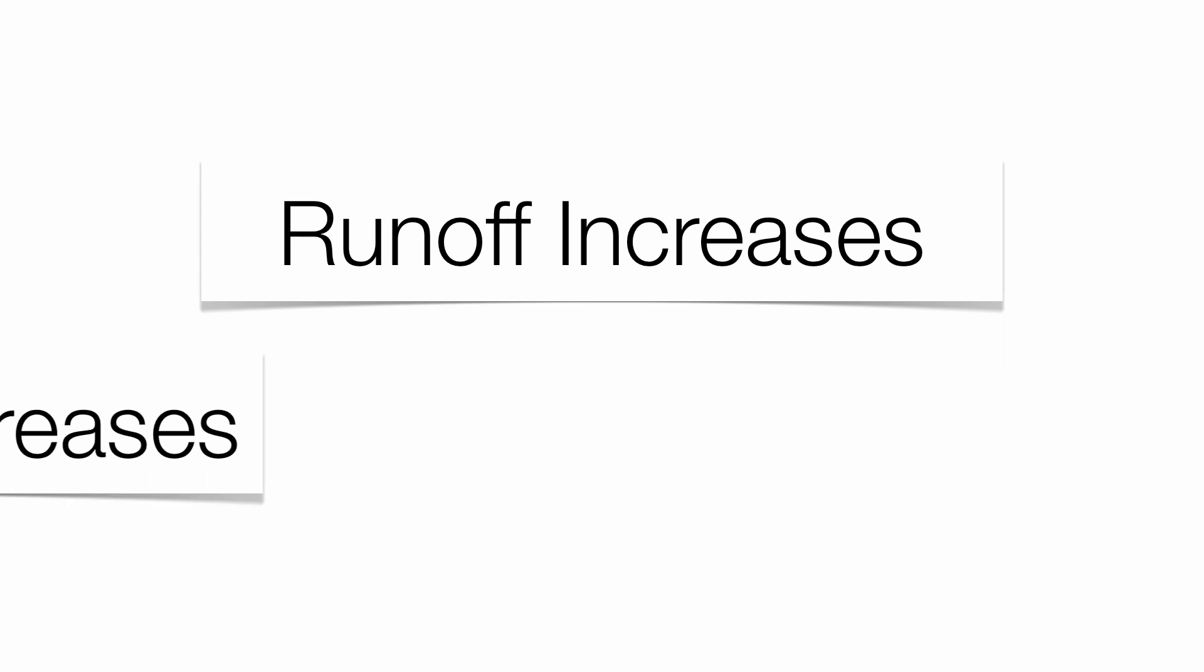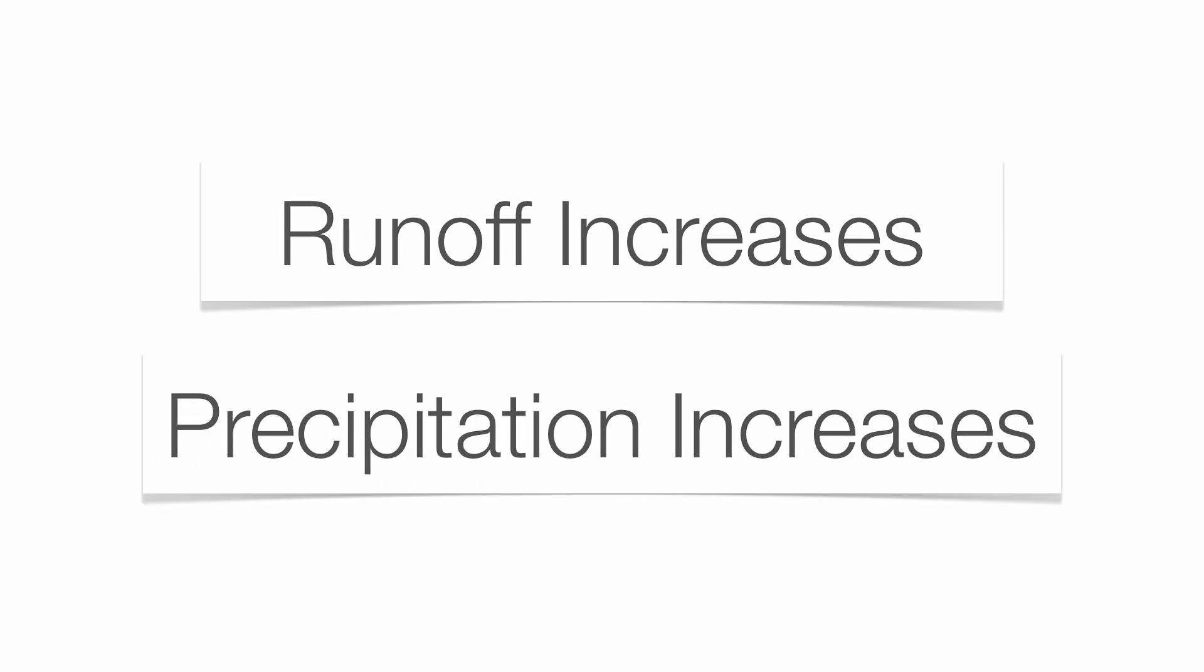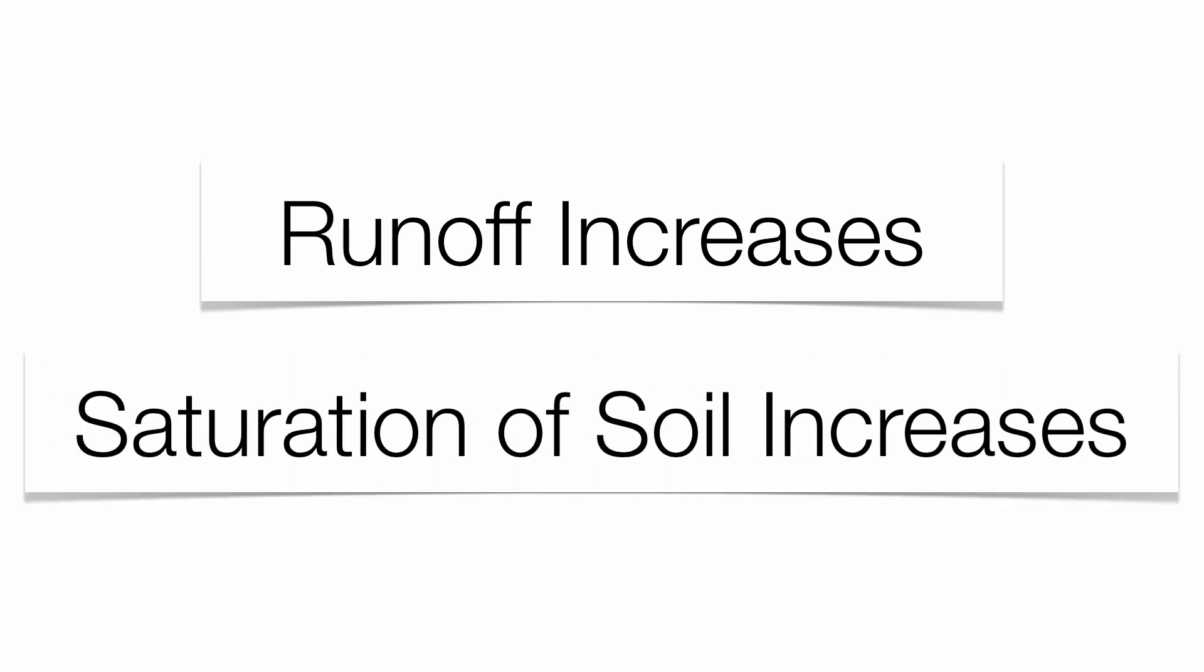As runoff goes up, your precipitation goes up. As runoff goes up, your saturation of soil goes up. So the more water you have in the soil, the more runoff that you're going to get at the surface.